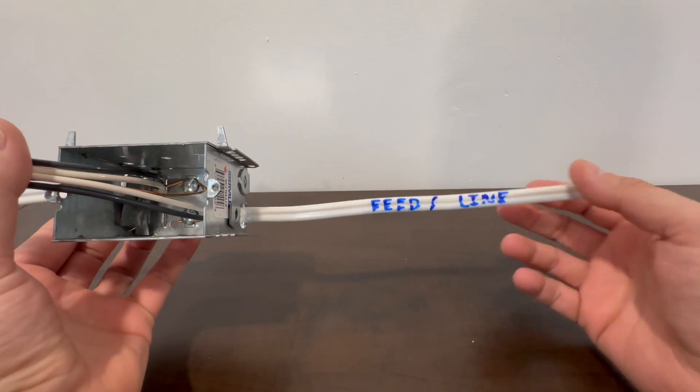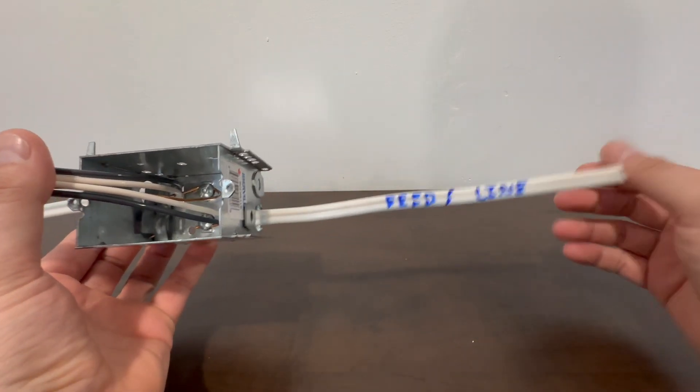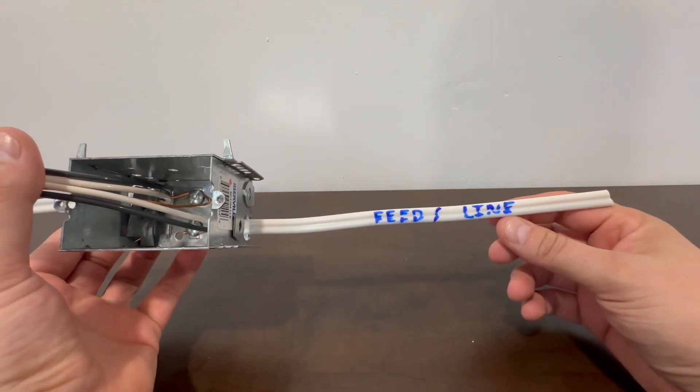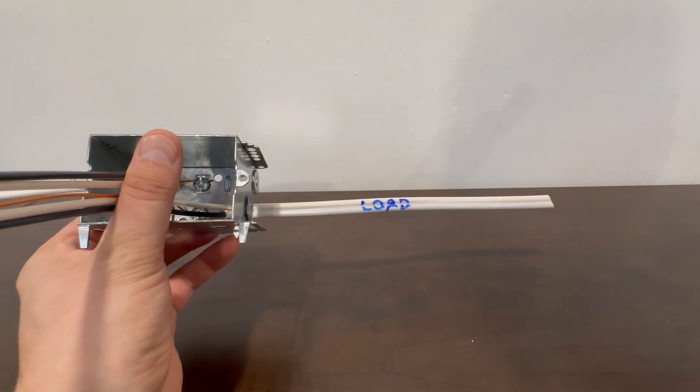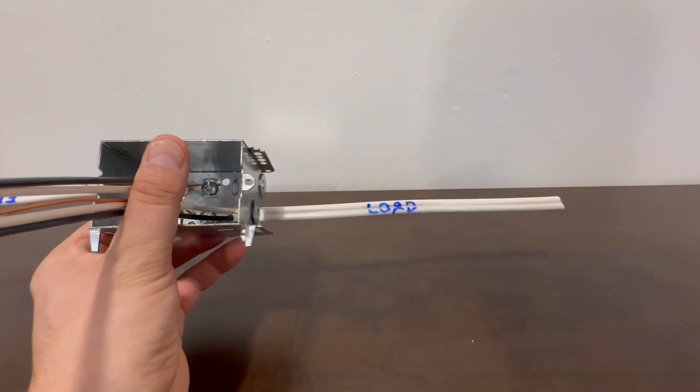You have on this side here is your feed. This will be coming from a panel, otherwise known as the line side. And on this side here, if I flip it around, we have our load side. So this would be going on to any other receptacle or device that you're trying to protect with that GFI.